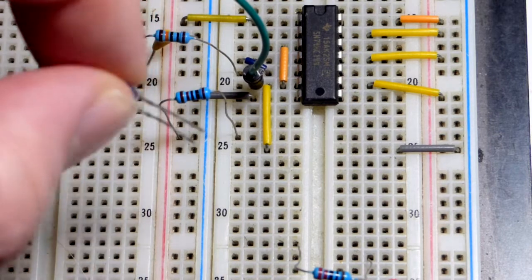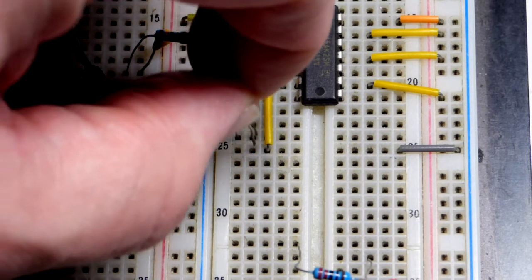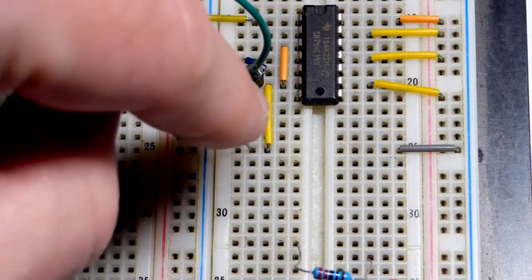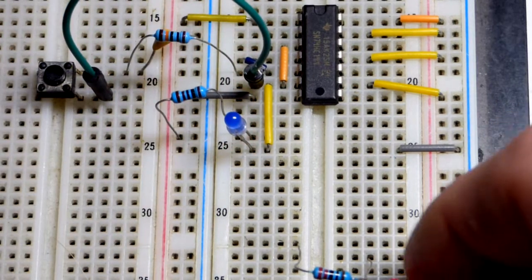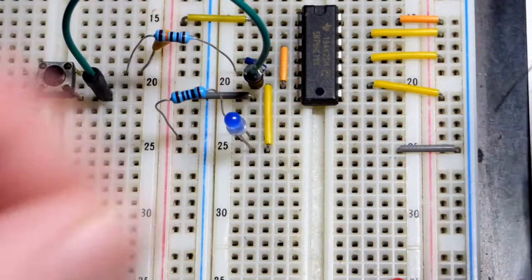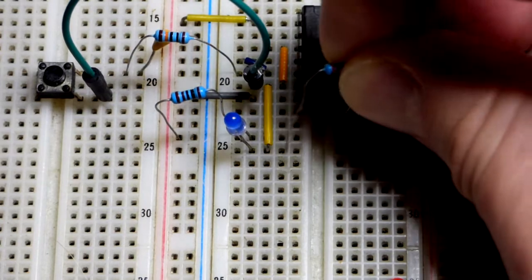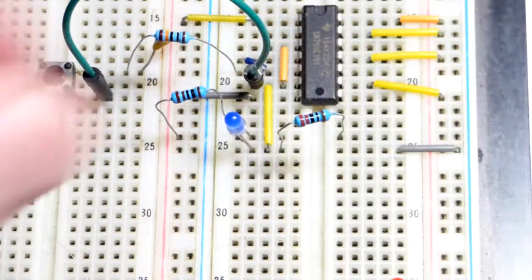Now we're going to take this resistor. You can see we have ground there, and we're going to put the resistor to the output. The jumper brings it down to get things out of the way, and we're going to take this LED.